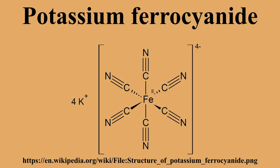Structure. Like other metal cyanides, solid potassium ferrocyanide — both as the hydrate and anhydrous salts — has a complicated polymeric structure. The polymer consists of octahedral iron centers cross-linked with K+ ions that are bound to the CN ligands.